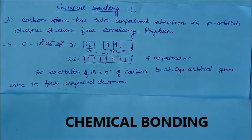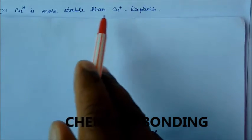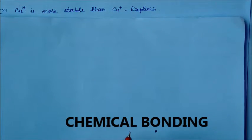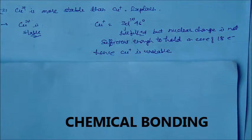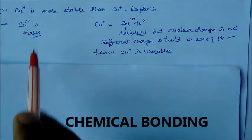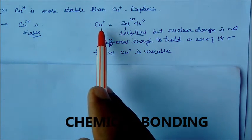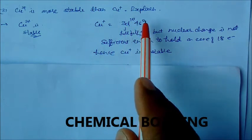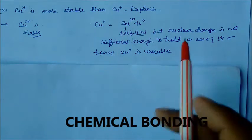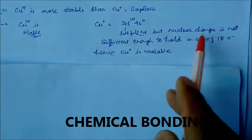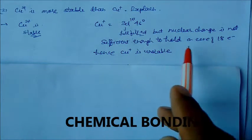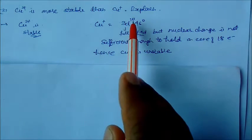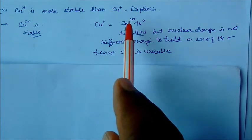Cu2+ is more stable than Cu+. What is the reason? If you see the electronic configuration, Cu+ is 3d10 4s0, so this is fulfilled. But in this case, nuclear charge is not sufficient enough to hold the core of 18 electrons. The nuclear charge is for 18 electrons - 10 plus 8, that is 3p and 3d.